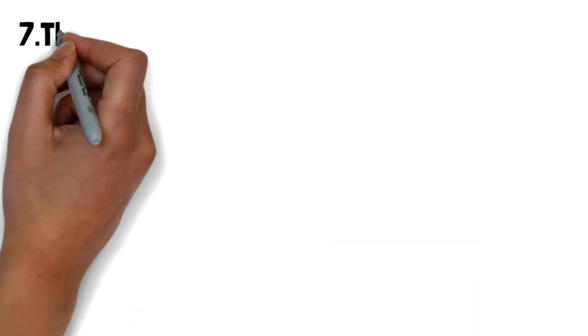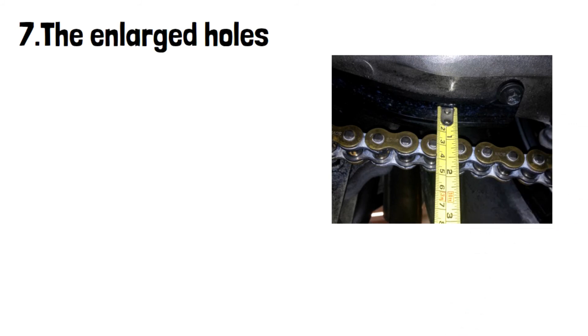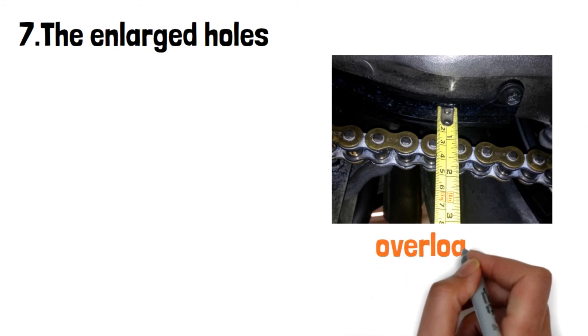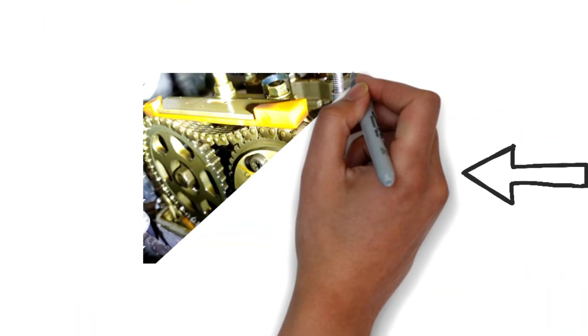Number seven: the enlarged holes. Occasionally, the chain link holes may get enlarged when the chain is overloaded. The chain link holes will be enlarged to the elliptical shape and cause the pins and rollers loose.